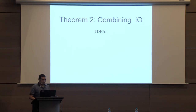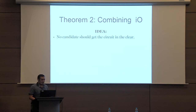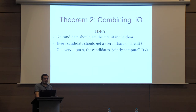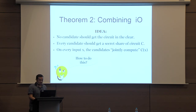Now, how do we combine IO candidates to get a secure IO candidate? The key idea is simple: with N IO candidates, each should not obfuscate the circuit in the clear, because if one candidate is broken it would completely reveal the circuit. Instead, every candidate should receive a secret share of the circuit, and jointly the candidates should be able to compute C(X) for any input X. Following the methodology of the previous work, we rely on MPC techniques.